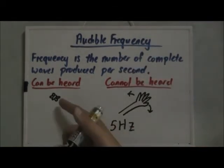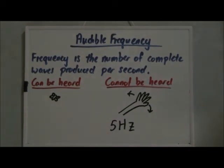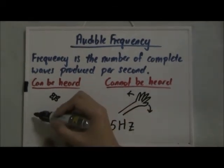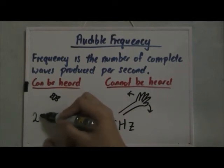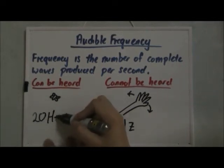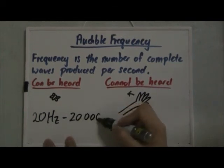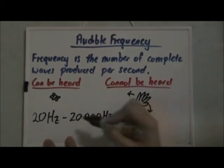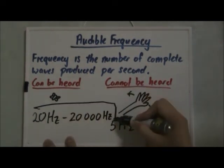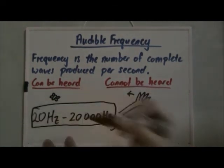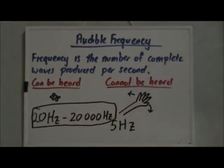And whereas for a mosquito, the flapping of wings is between 20 hertz to 20,000 hertz. And this is the audible frequency of a human being.